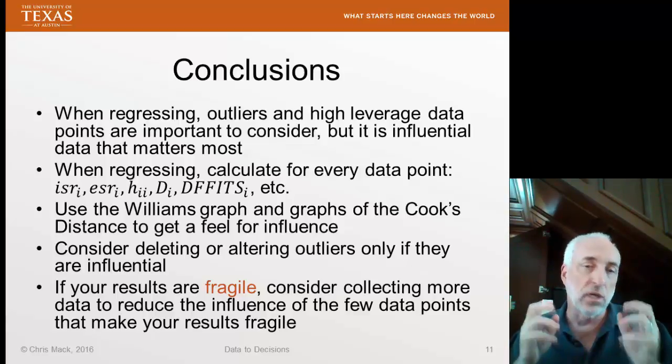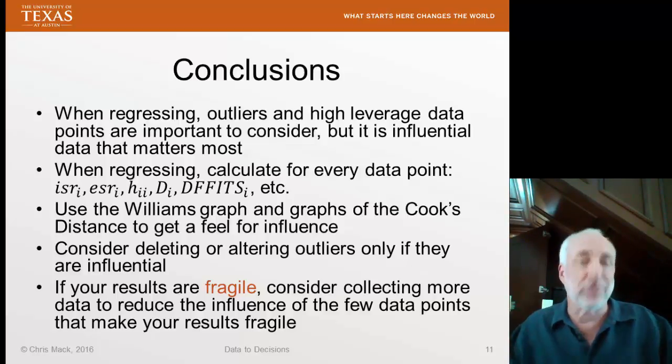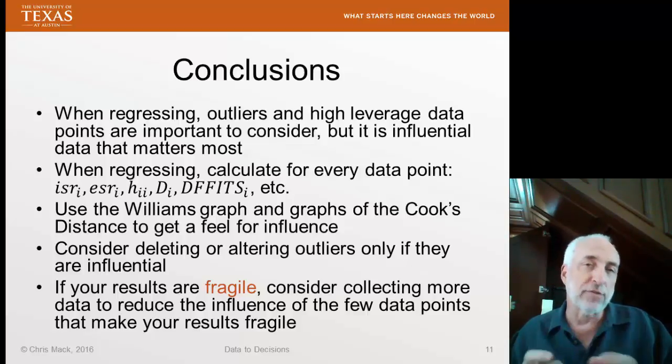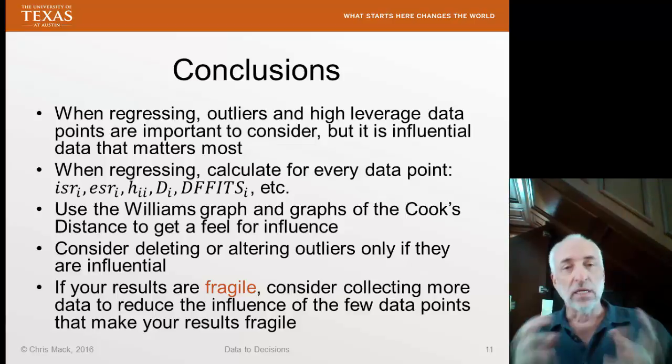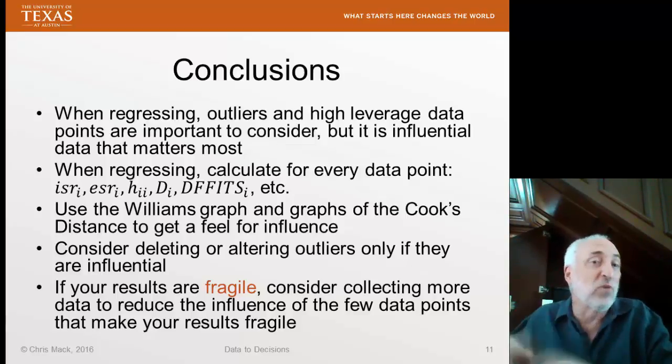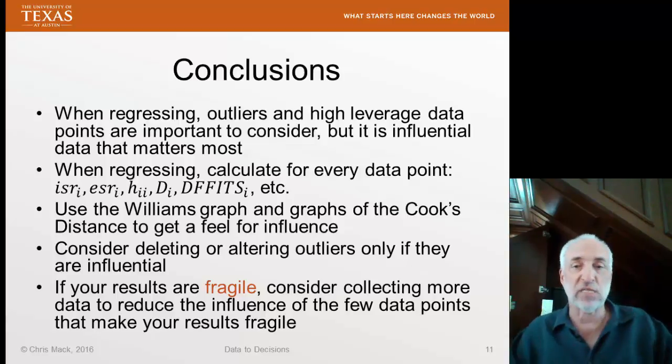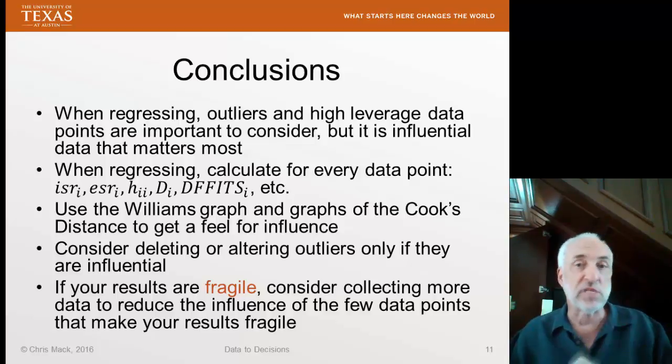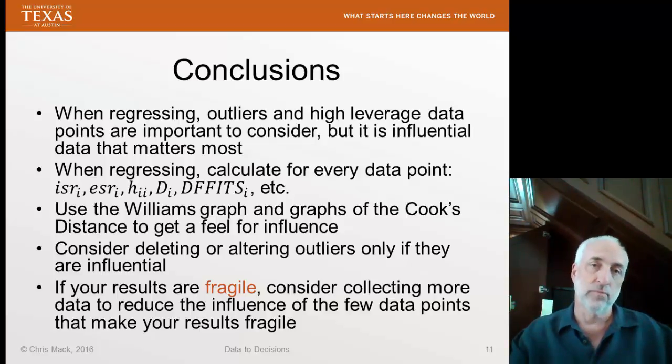So that's the first way in which we're going to use the idea of influence is how to treat outliers. We only deal with outliers carefully and thoughtfully if it matters, if it really is influential. The other reason we test for influence is to look for fragile regression results. Our results are fragile if we're overly sensitive to just a couple of data points. What do you do if you have a fragile result? The best thing by far is to go out and collect more data. Go find the influential data points and collect more data in that region of your process space. Try to double up, triple up on those data points. That will make the results less fragile, less sensitive to any specific data point.